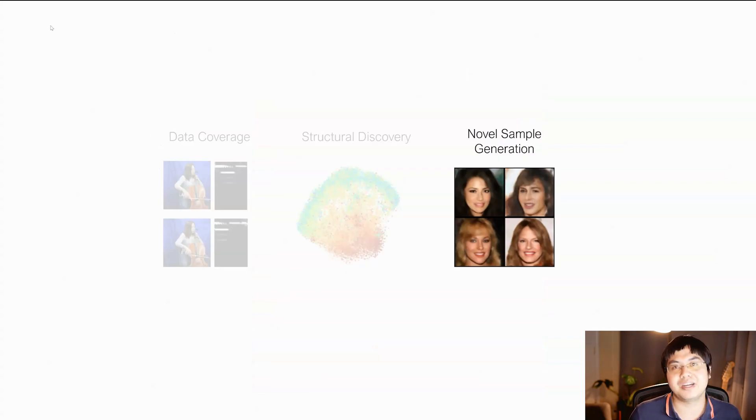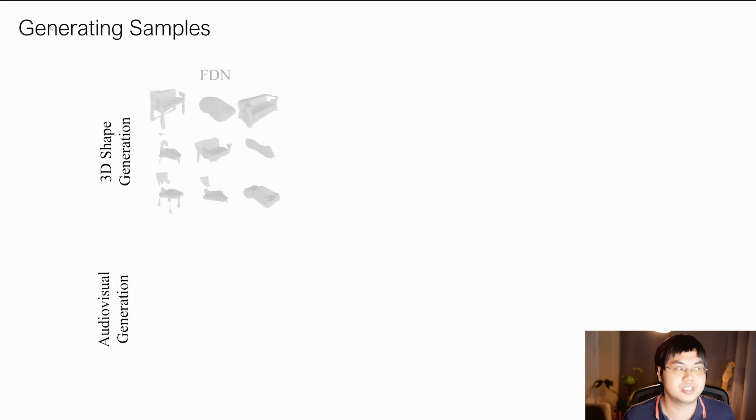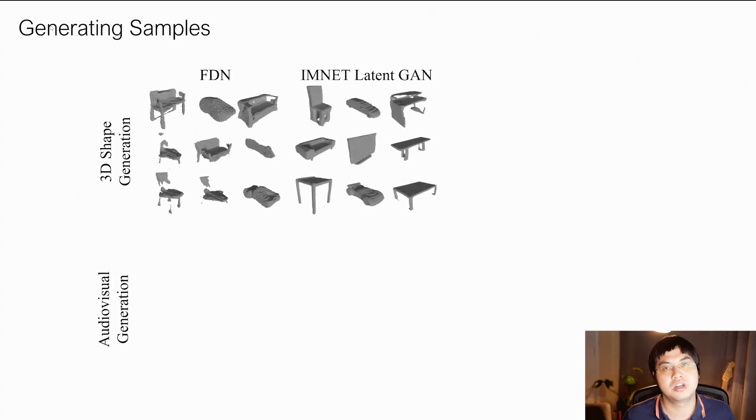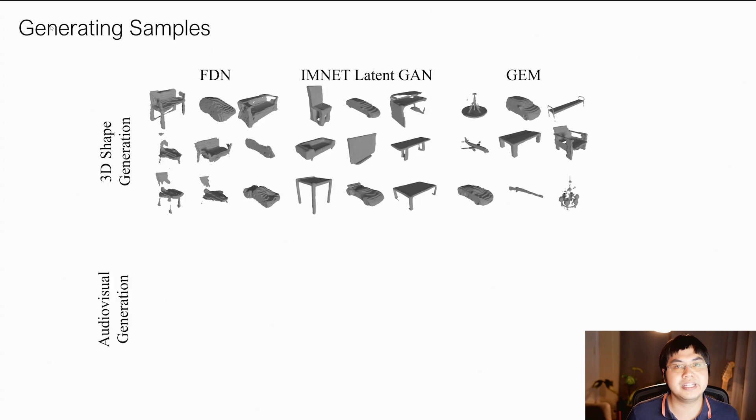Finally, let's talk about generating new samples using our manifold. To generate new samples using our manifold, we simply just walk along our manifold. We first consider 3D shape generations. We find that FDN gets so much poorer generations, while training a latent GAN on top of the implicit decoder of IMNet is also somewhat poor. Finally, our approach looks more diverse and has more shapes.